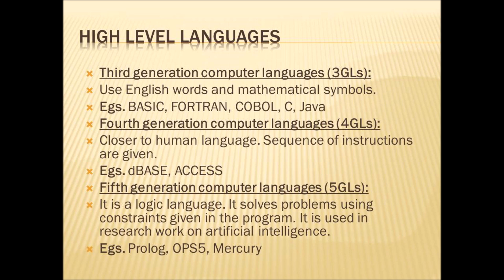Fifth generation languages (5GL) are logic languages. They solve problems using constraints given in the program and are used in research on artificial intelligence — that is, giving intelligence to computers. Examples include Prolog, OPS5, and Mercury. These are still in the developing stage.